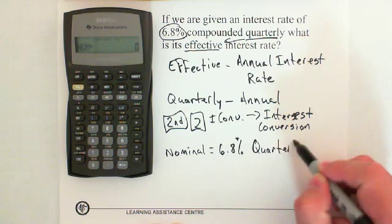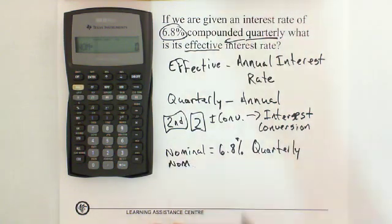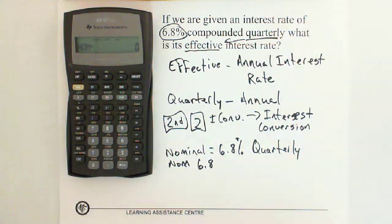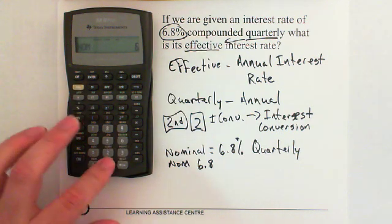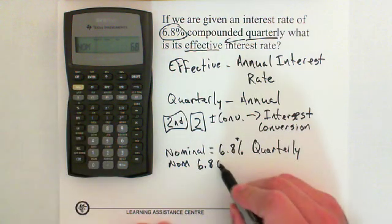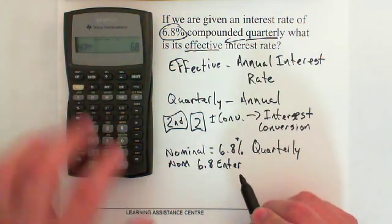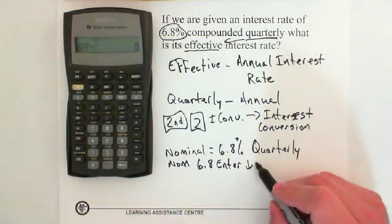So how do we put this into the calculator? For NOM, we just type in 6.8. Don't worry about converting it from a percent to a decimal — the calculator will understand that 6.8 is a percentage. So we type in 6.8 and then hit the Enter button. Then we push the down arrow once, which brings us to EFF.